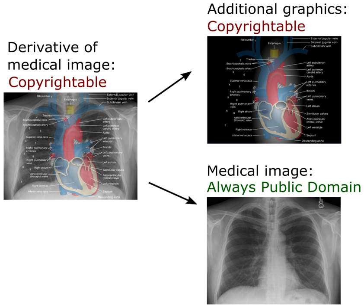The judge also determined that the work had been properly attributed — in particular, that it was sufficient to credit the author of the photo as prominently as authors of similar authorship, such as the authors of individual maps in the book, and that the name CC BY-SA 2.0 is sufficiently precise to locate the correct license on the Internet and can be considered a valid URI of the license.